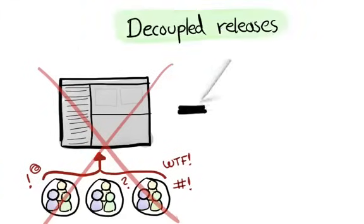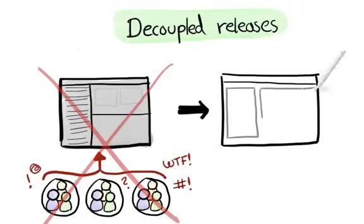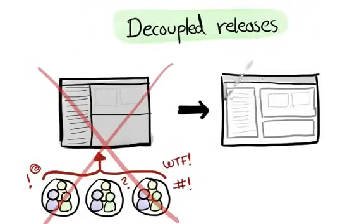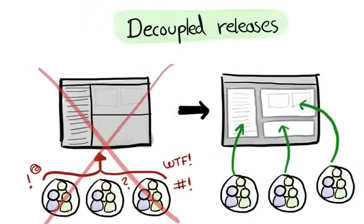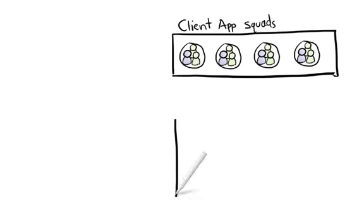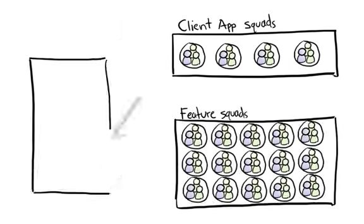Using Chromium embedded framework, the client is now basically a web browser in disguise. Each section is like a frame on a website, and squads can release their own stuff directly. As part of this architectural change, we started seeing each client platform as a client app and evolved three different flavors of squads. Client app squads, feature squads, and infrastructure squads.